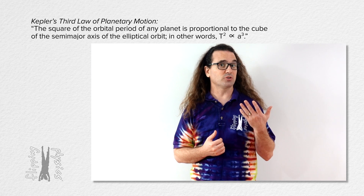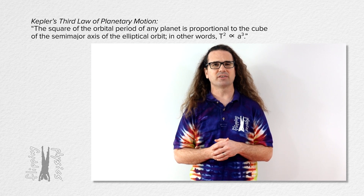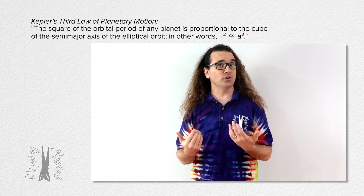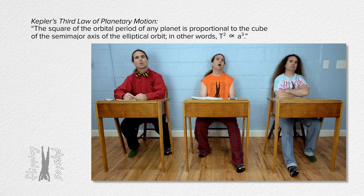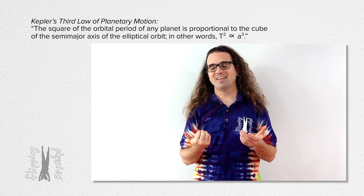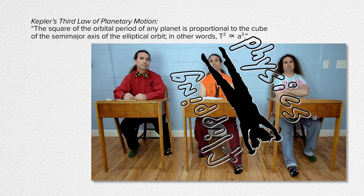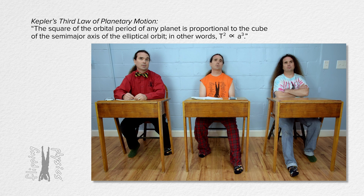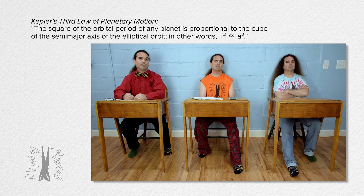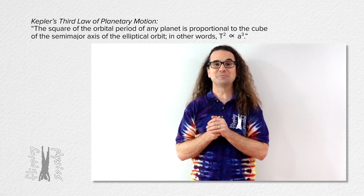Good morning. We have already learned about Kepler's first and second laws of planetary motion. Bobby, please read Kepler's third law of planetary motion. The square of the orbital period of any planet is proportional to the cube of the semi-major axis of the elliptical orbit. In other words, T squared is proportional to a cubed. Thank you very much, Bobby. You did an excellent job.